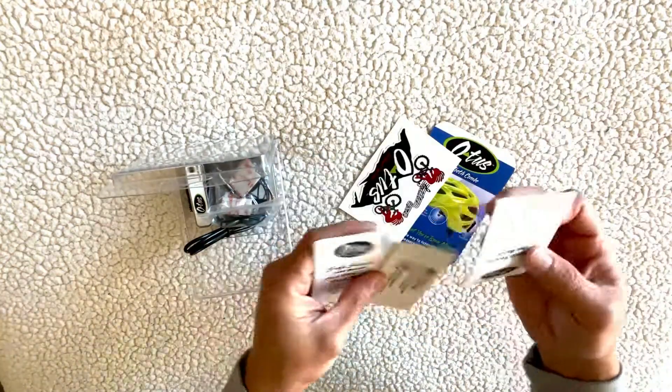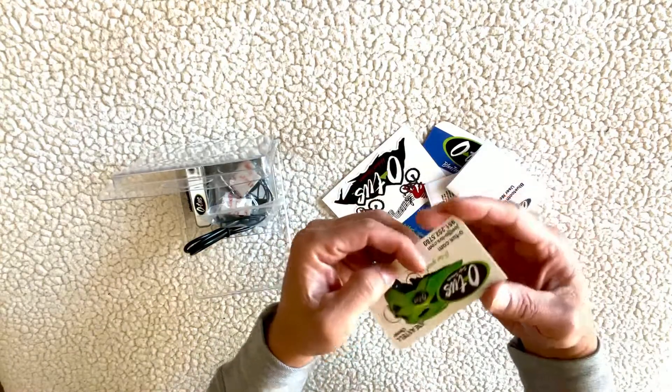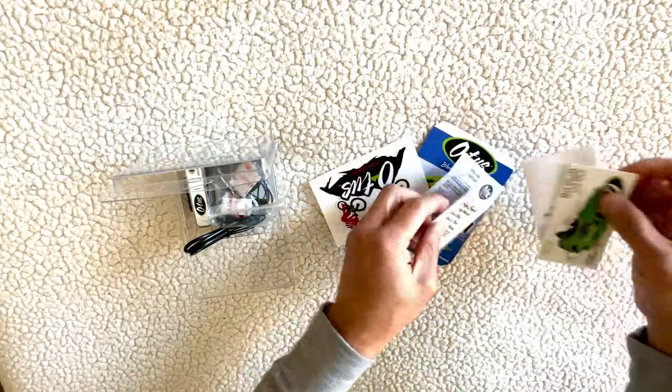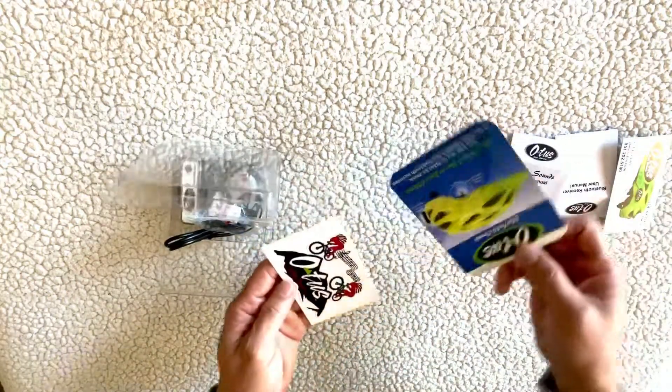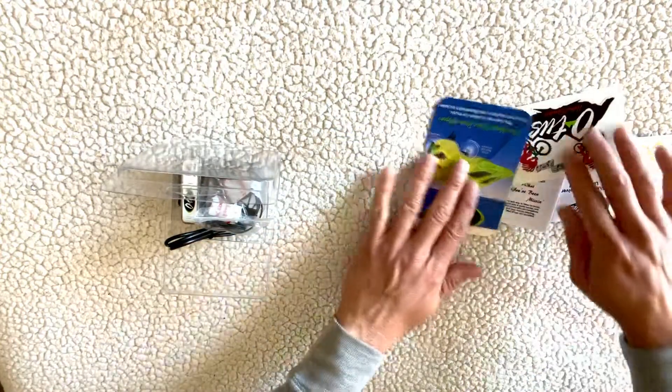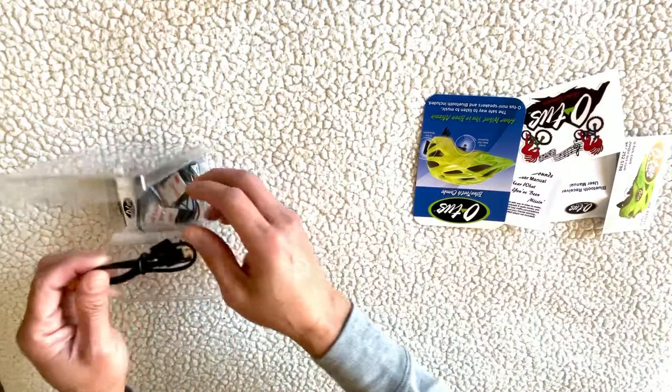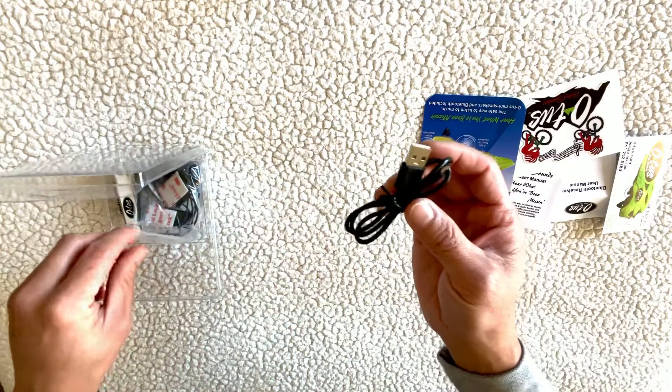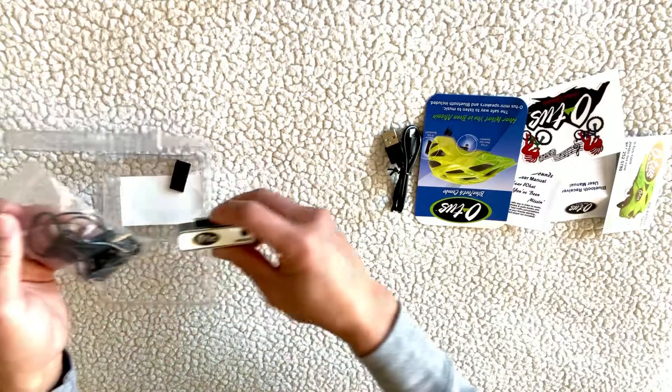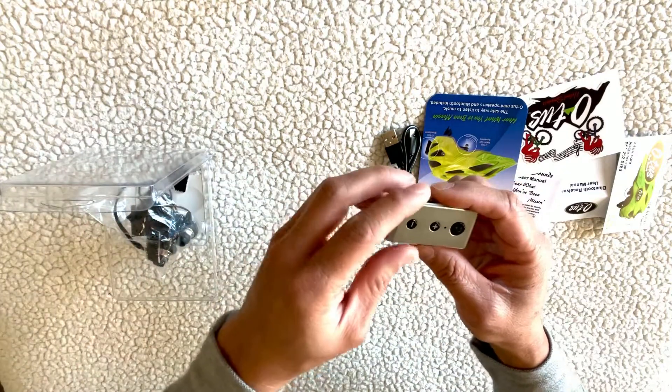Some instructions going on here, little business card for Otis, some cool stickers, looks like a USB charger, cable, and the receiver.